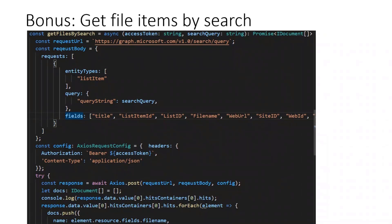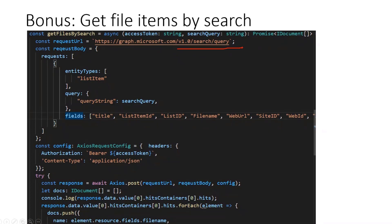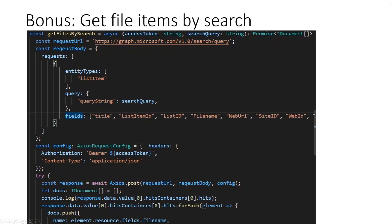One last bonus slide — not directly relating to the main topic, but since it's quite new and not well documented: how I retrieve files by search. This uses the Microsoft Graph search query endpoint. In the request body I specify that I want list items rather than drive items, because I'm using the metadata. I hand over a search query and ask for several fields to be returned. Although I'm only retrieving, I have to POST all this against Microsoft Graph.